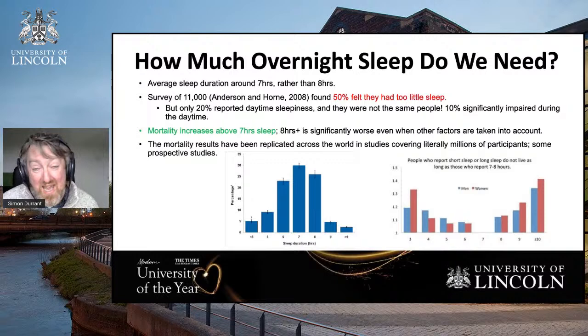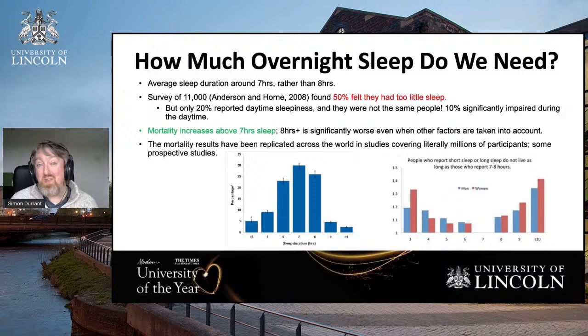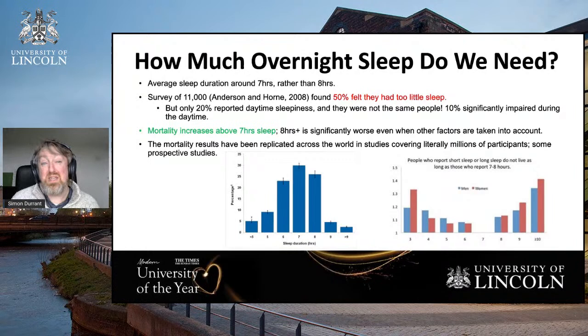As you get more sleep above eight hours it gets worse; as you get less sleep below seven hours it also gets worse. I always have to give a note of caution here: this should not be translated to an individual circumstance. Individuals vary widely — if you feel you need nine hours sleep a night, get nine hours. It is just that at a population level, seven hours sleep a night is optimal from a mortality perspective — ideal for living a long and hopefully happy life.